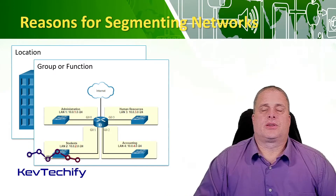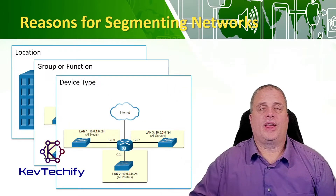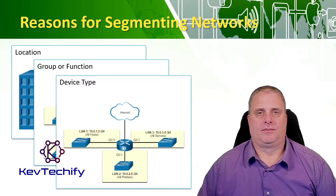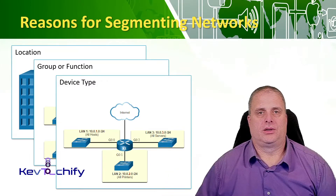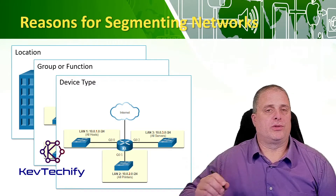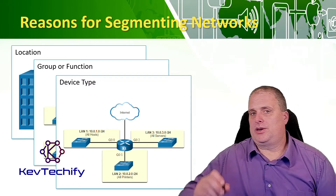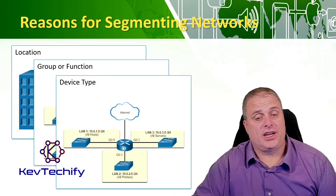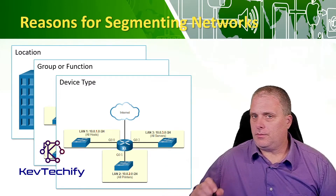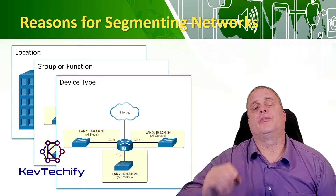Another way to segment is by device type. LAN 1 gets all hosts — all computers out in the office. LAN 2 gets all the printers, so large print jobs go on LAN 2 without interfering with anyone else, and you can set up security to make sure not everybody is printing personal items. LAN 3 gets all your servers — we add extra security because that's your data and your company's livelihood.